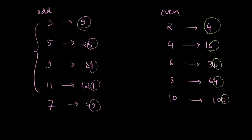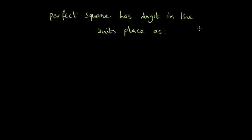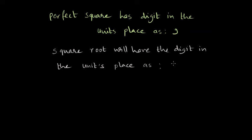It's also noticeable that by looking at the number in the units place, you can identify what might be the units place digit in the square root as well. So let's say the perfect square given has the digit in the units place as 9. Then square root will have the digit in the units place as either 3 or 7, because we saw the square of 3 is 9 and square of 7 is 49. So either of these two numbers might be there in the units place of the square root.